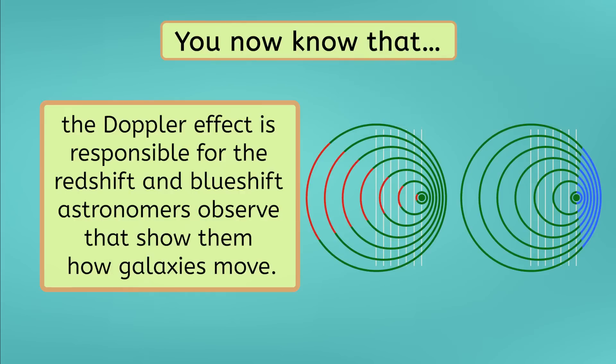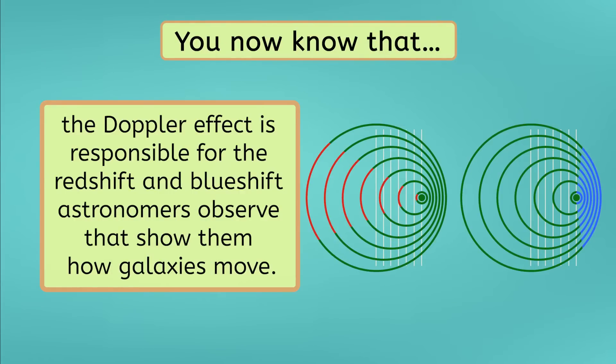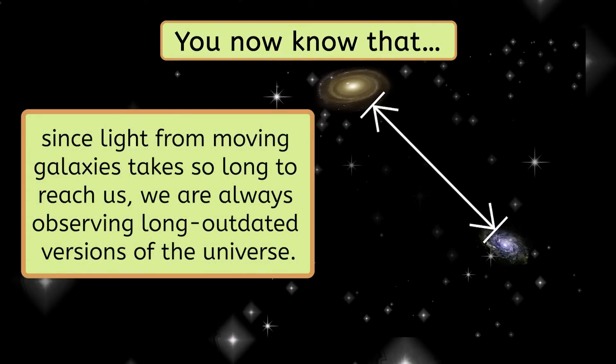Let's recap what we've learned today. You now know that the Doppler effect is responsible for the redshift and blueshift astronomers observe that show them how galaxies move. And since light from moving galaxies takes so long to reach us, we are always observing long outdated versions of the universe. Pretty cool, huh?